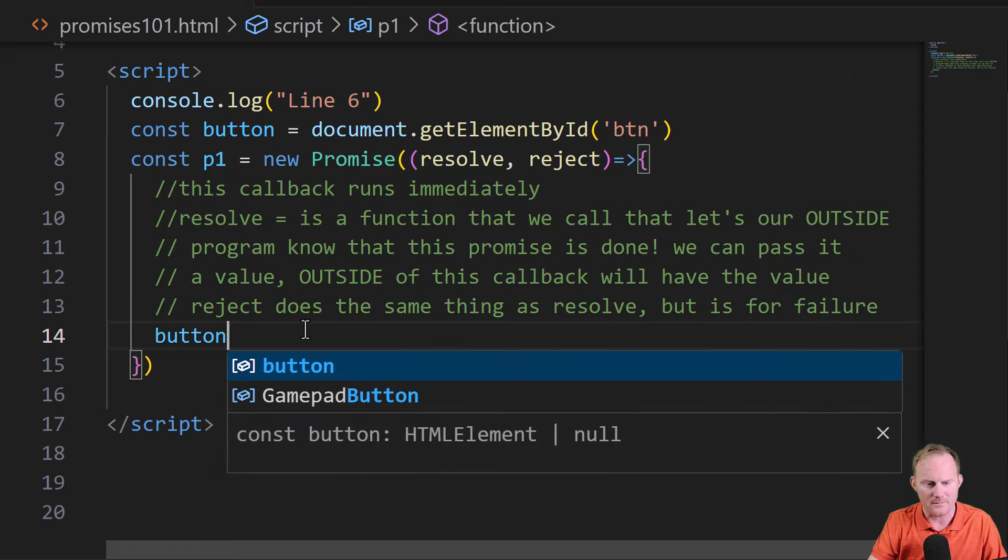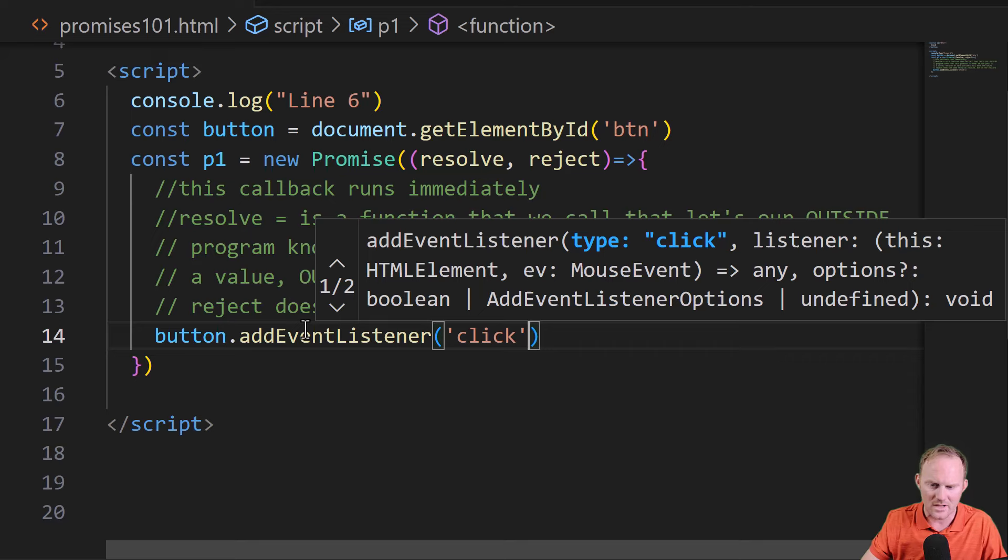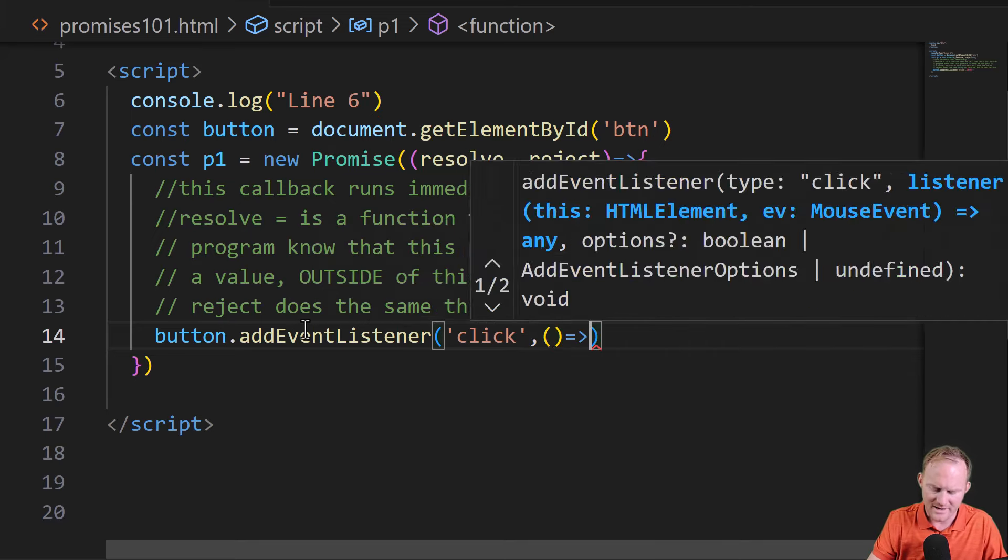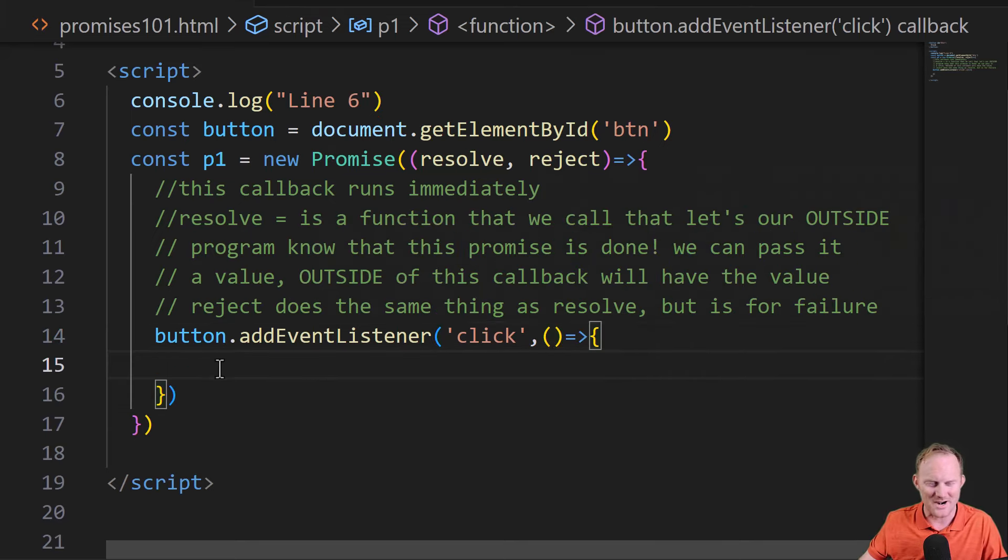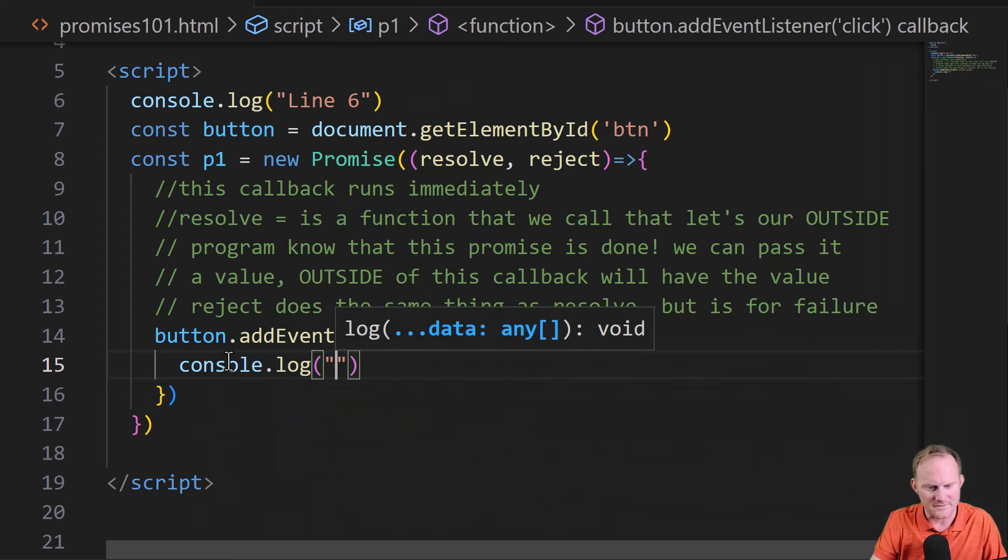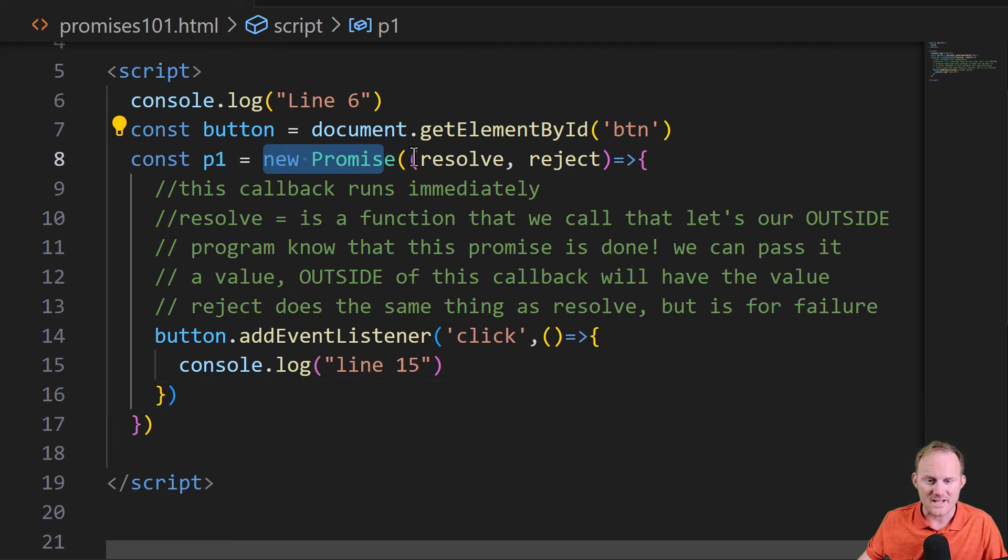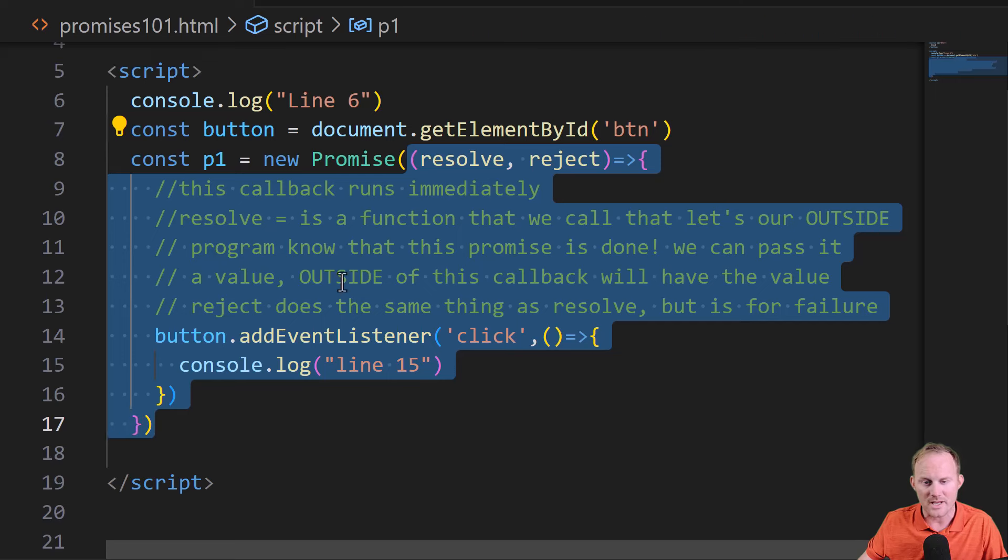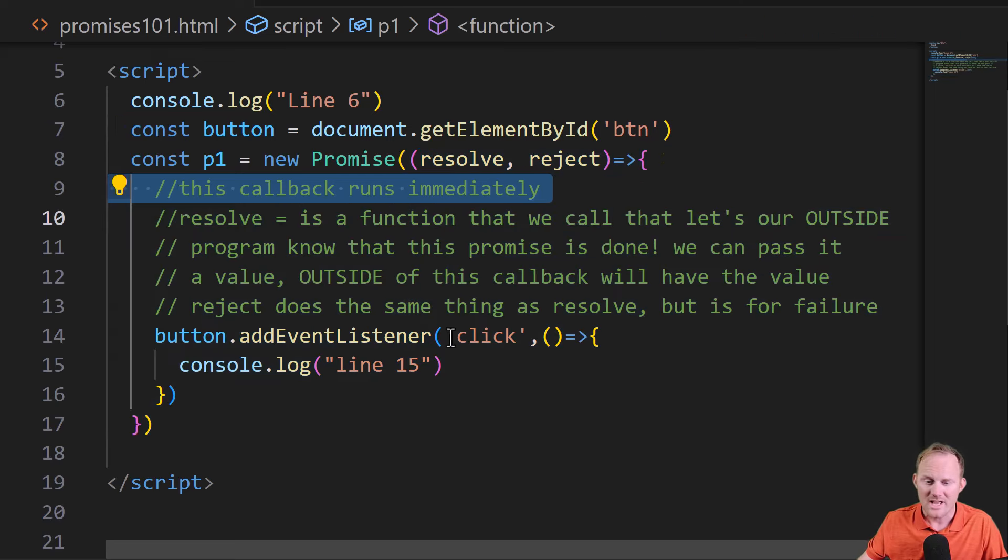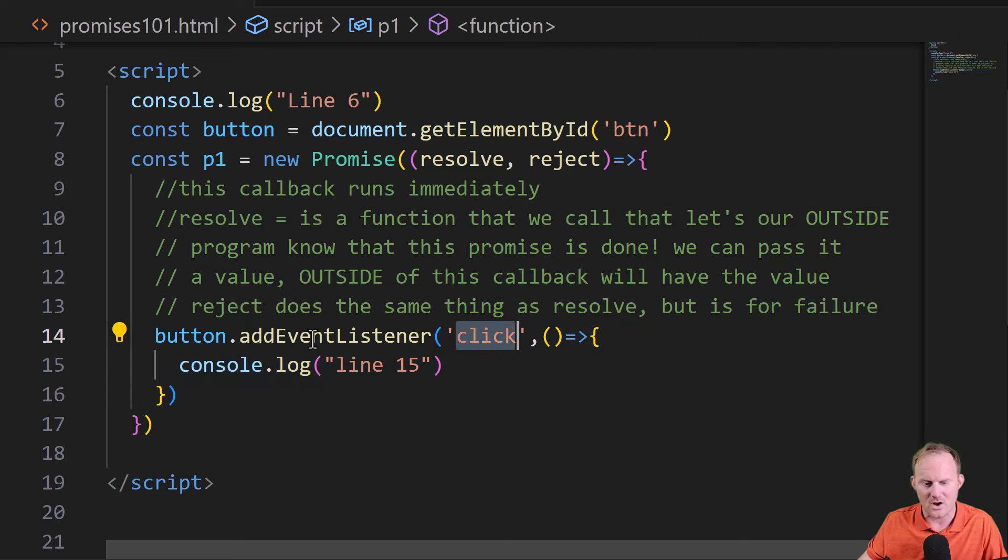We will take our button and we'll do add an event listener. What type of listener? We will add a click listener. That is going to have a callback. Again, callbacks are everywhere inside here. Let's console.log line 15 so that we can see this has run. So just quick step back. P1 new promise. This thing runs immediately. That's how the promises work. This one though is not going to run until the user has clicked on this button.